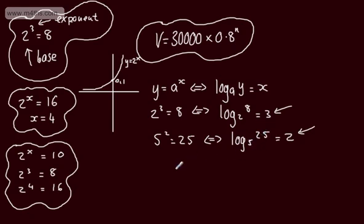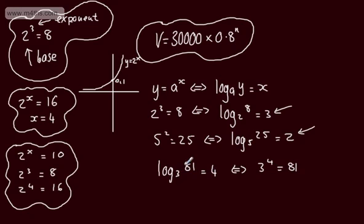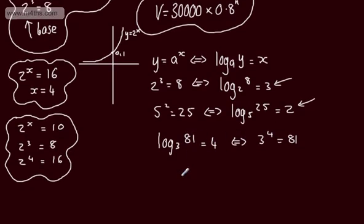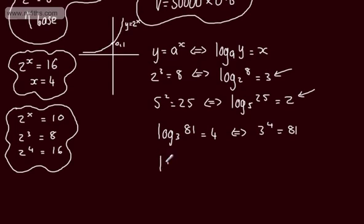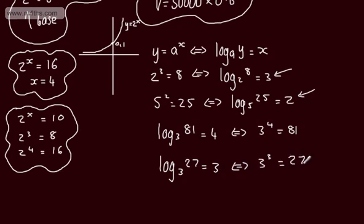Writing in the other direction: log to the base 3 of 81 equals 4, so the exponential equivalent is 3 to the power of 4 equals 81. Similarly, log to the base 3 of 27 — what power is 3 raised by to get 27? The answer is 3. Therefore, 3 to the power of 3 equals 27, giving us the equivalent statement.